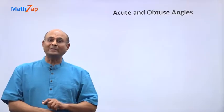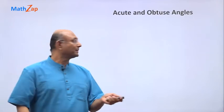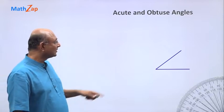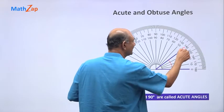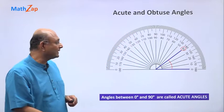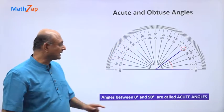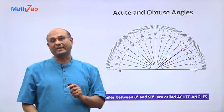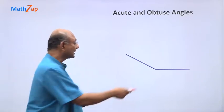We know about a right angle. 90 degrees is a right angle. But there are a lot of angles like this which are smaller than 90 degrees. This one is only 40 degrees. So angles that lie between 0 and 90, such angles are called acute angles.